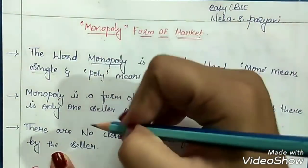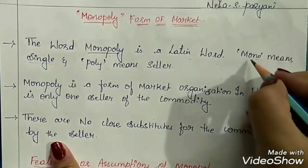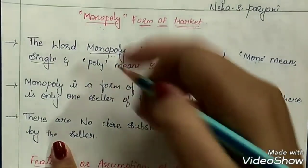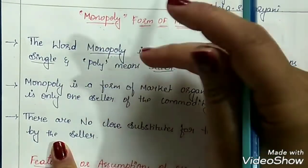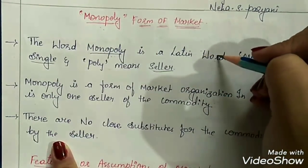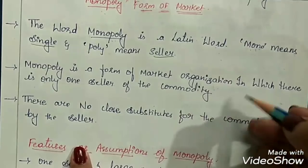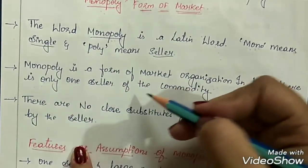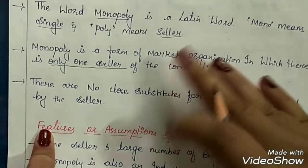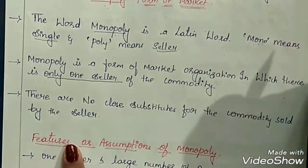This is an imperfect competitive market. The word Monopoly is a Latin word. Mono means single and poly means seller. So when we divide this word Monopoly, we get the meaning that is single seller — this word is derived from Latin language. So by this, it is quite simple that Monopoly is a form of market organization in which there is only one seller of the commodity. This is the main feature of the Monopoly market. There is a single seller for the commodity, but there can be many buyers.